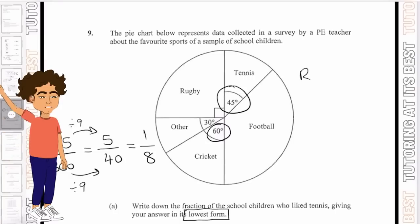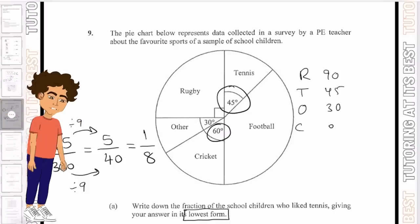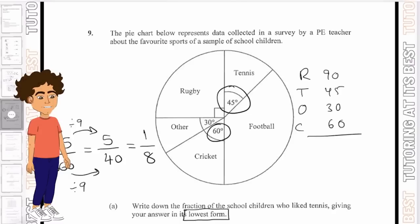We know the total is 360 degrees. So we simply need to go ahead and subtract everything from 360. We know rugby is 90, tennis is 45, other is 30, and cricket is 60.